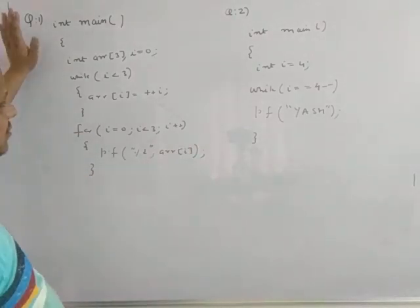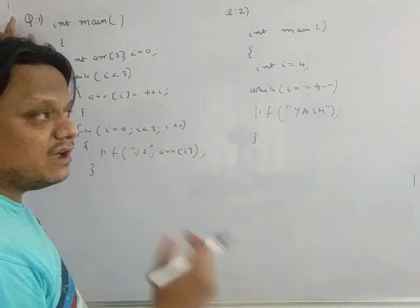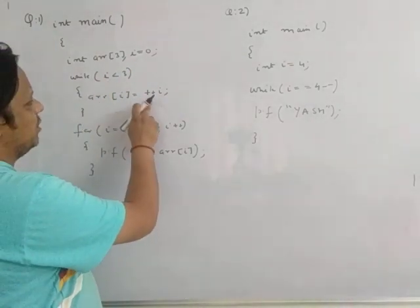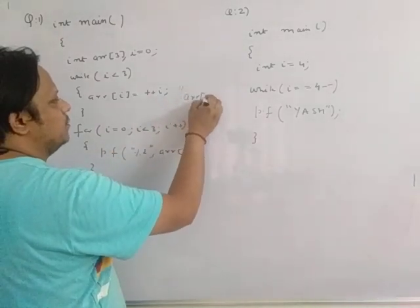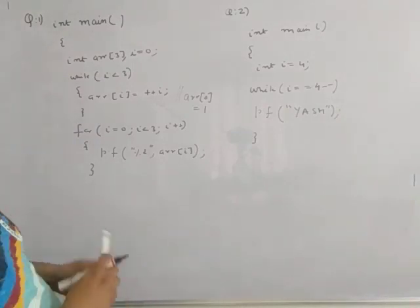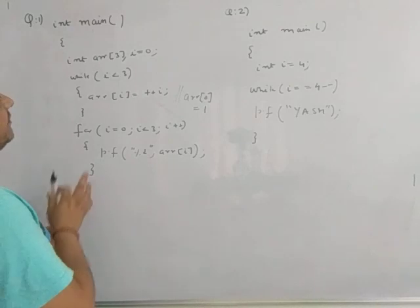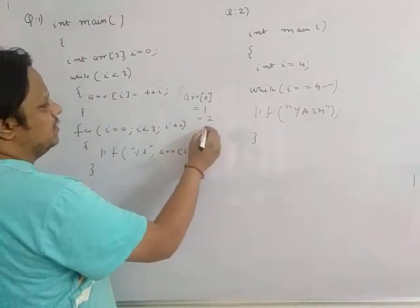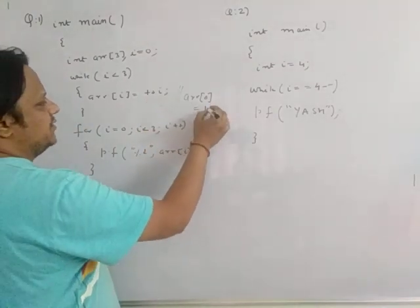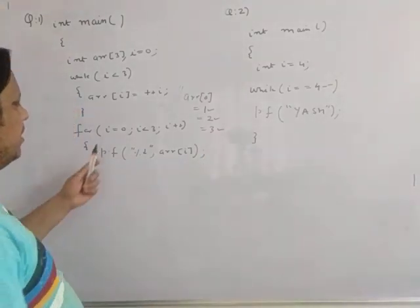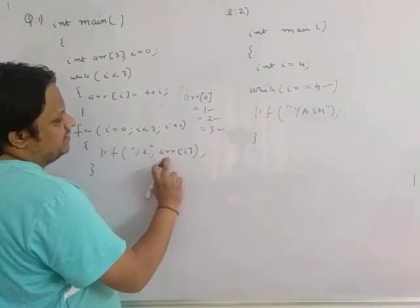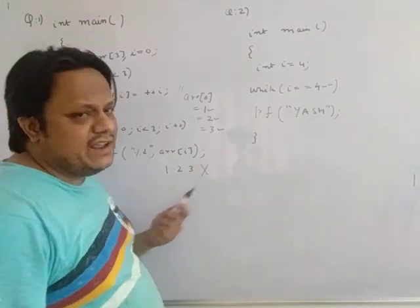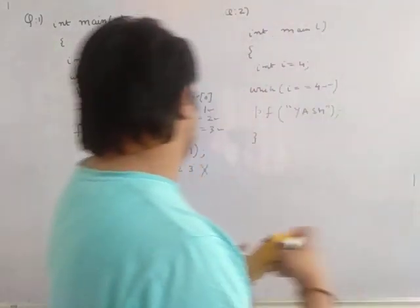Now, normally when you have this question on paper, the wrong approach is: `i = 0`, `0 < 3` condition true, so `arr[0] = 1`, then `arr[1] = 2`, then `arr[2] = 3`. Then in the print loop you print `arr[0]` is 1, `arr[1]` is 2, `arr[2]` is 3, and you write answer 1 2 3. About 80% of students write answer 1 2 3, which is absolutely wrong.